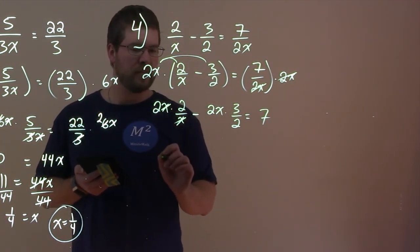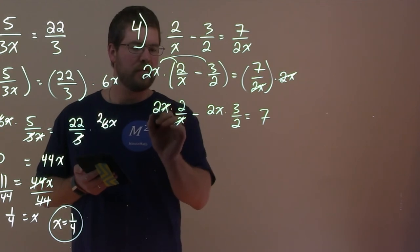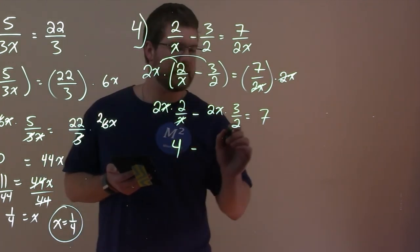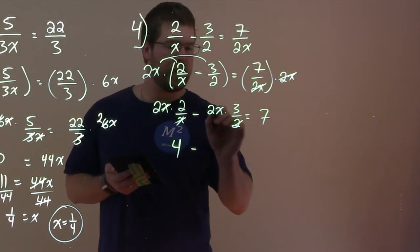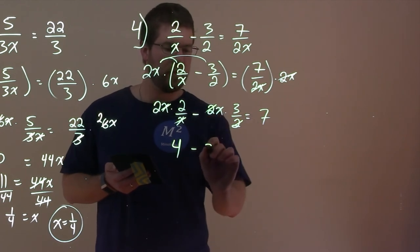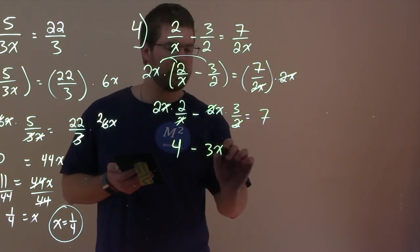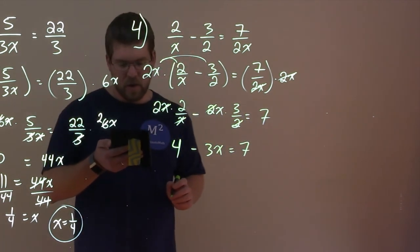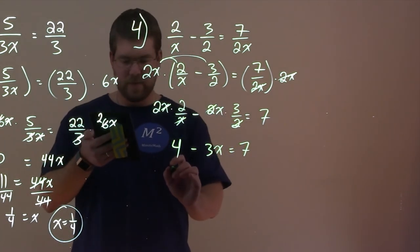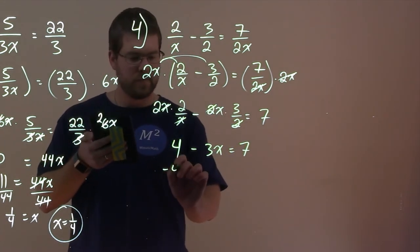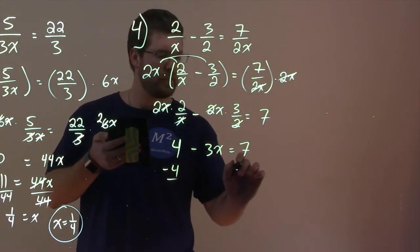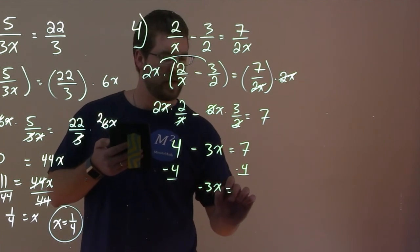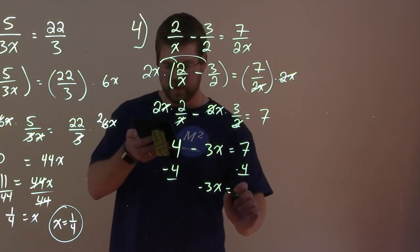Continuing to simplify: the x's cancel leaving 2 times 2 which is 4, then the 2's cancel leaving x times 3 which is 3x, and the 7 comes down. From there we subtract 4 from both sides, leaving us with negative 3x equals 7 minus 4, which is 3.